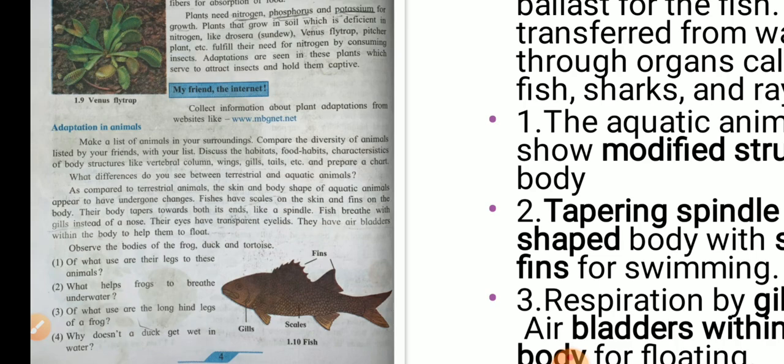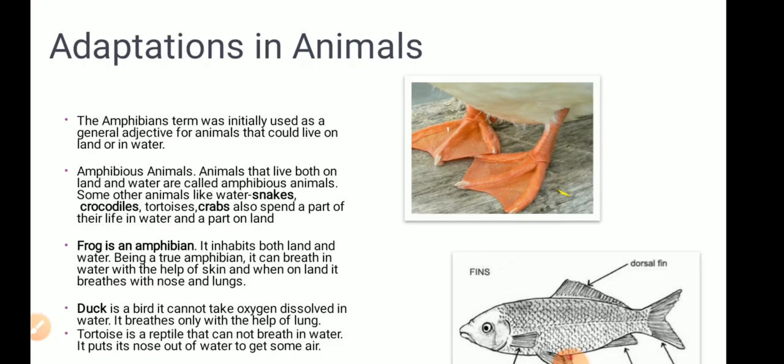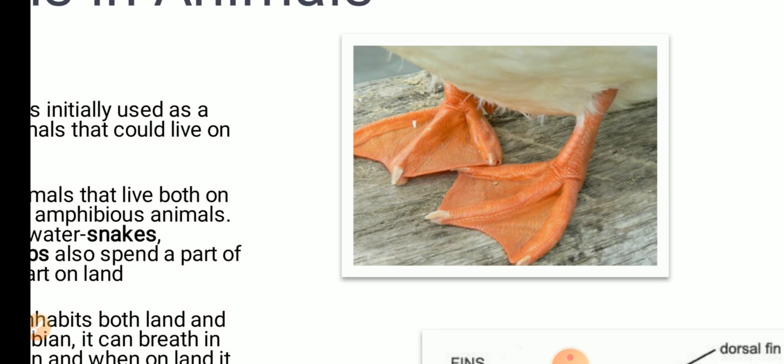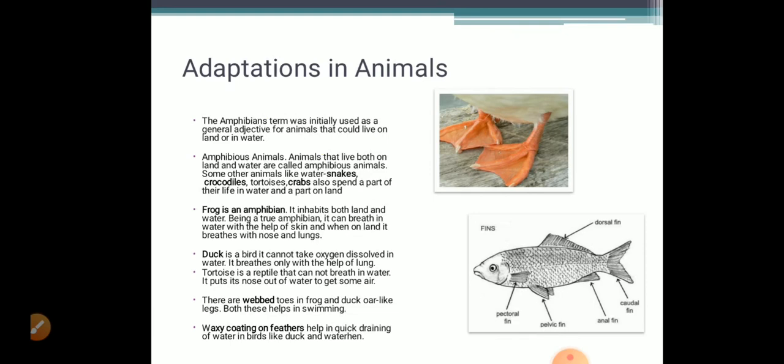Let us see how the frog and the duck have webbed toes and they can use them like their oars. Water flows off the waxy feathers of the birds like the duck and the water hen. Webbed toes, slippery smooth skin and a triangular head helps the frogs to swim easily through the water. They can live on land as well as in water due to their ability to breathe through the skin in water